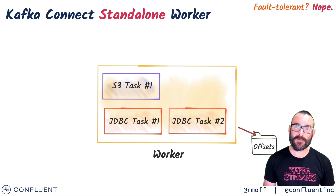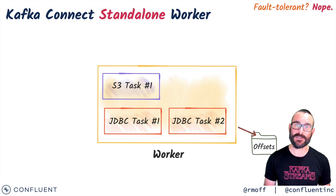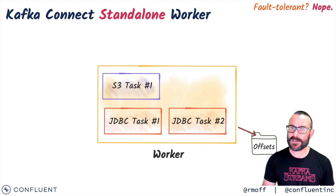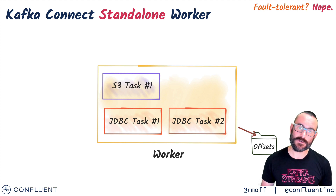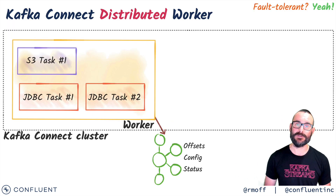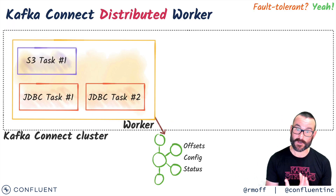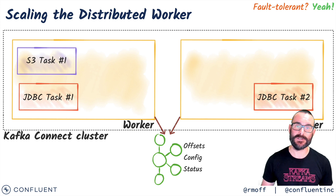To run Kafka Connect you deploy what are called workers, which are JVM processes. They don't run on your Kafka brokers. They can run bare metal and Docker in two different modes. In standalone mode, which is okay, but much better is distributed mode. You can start with a single worker and scale it out for throughput and resilience.